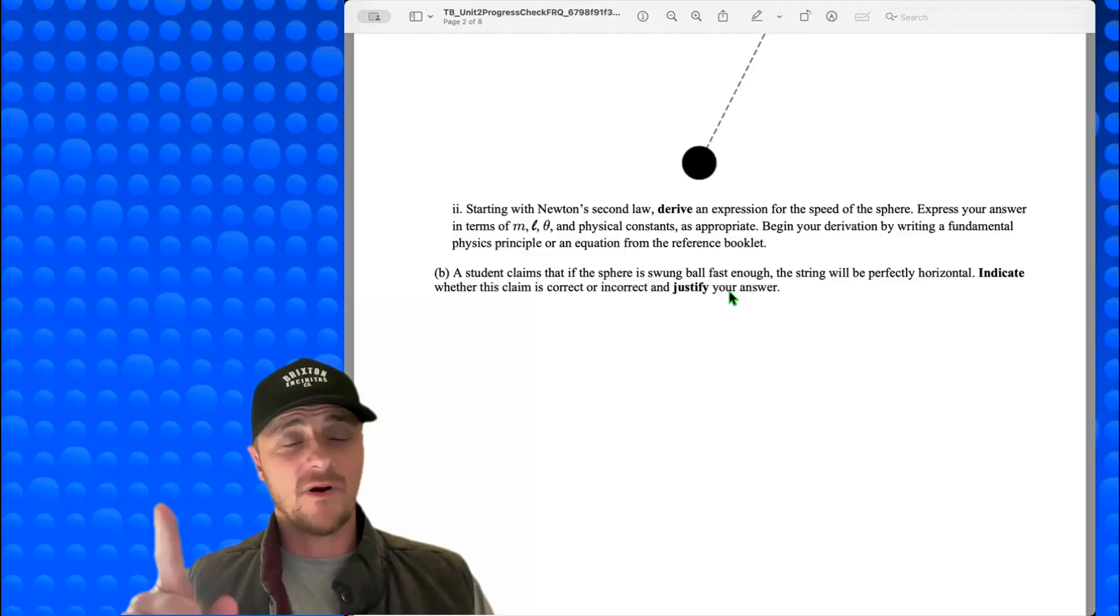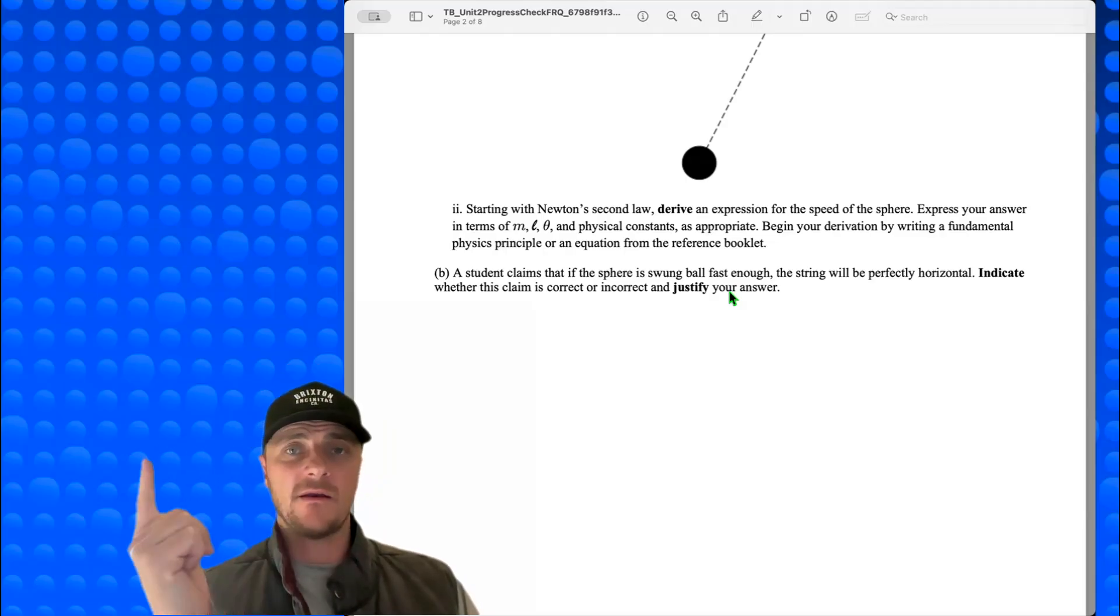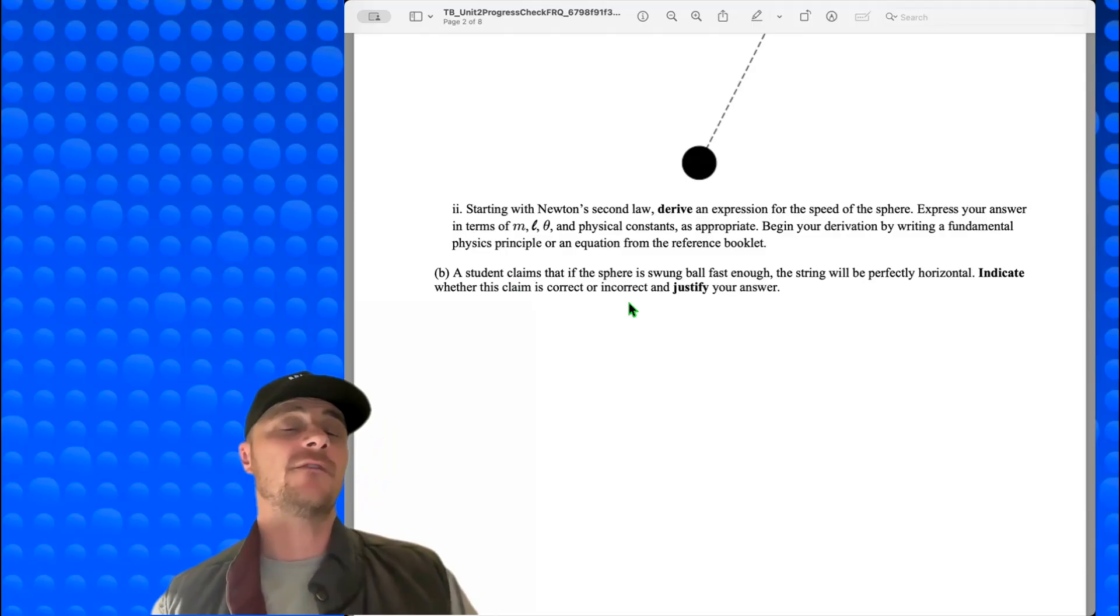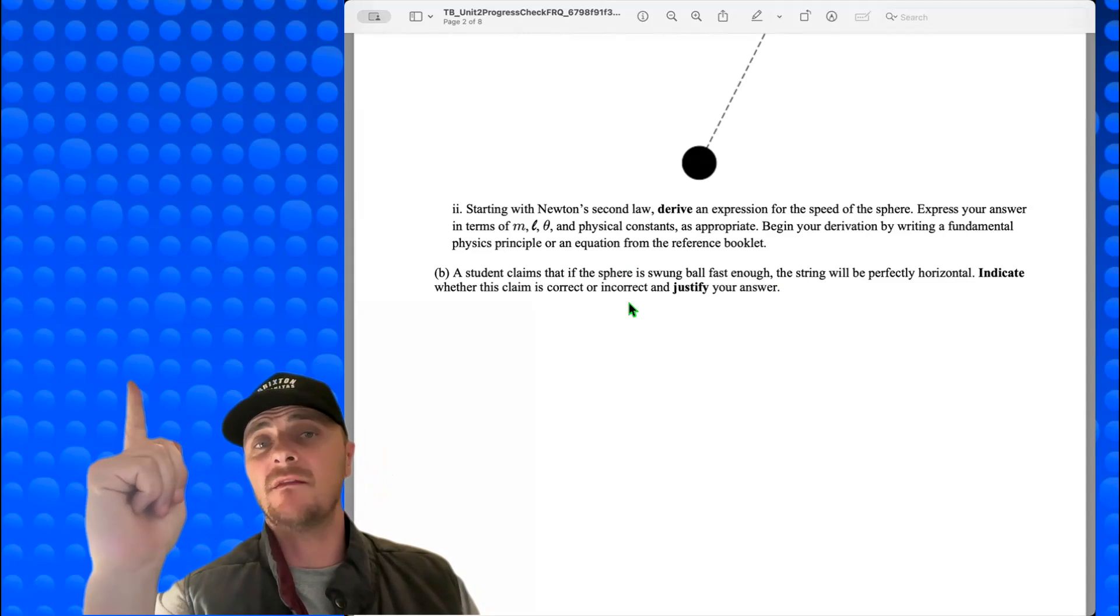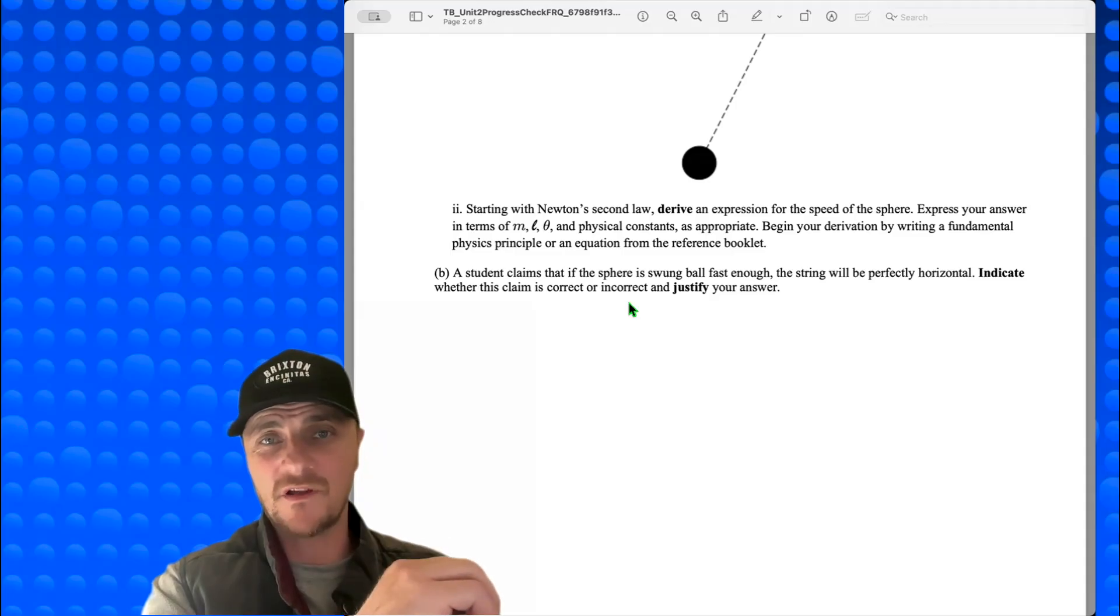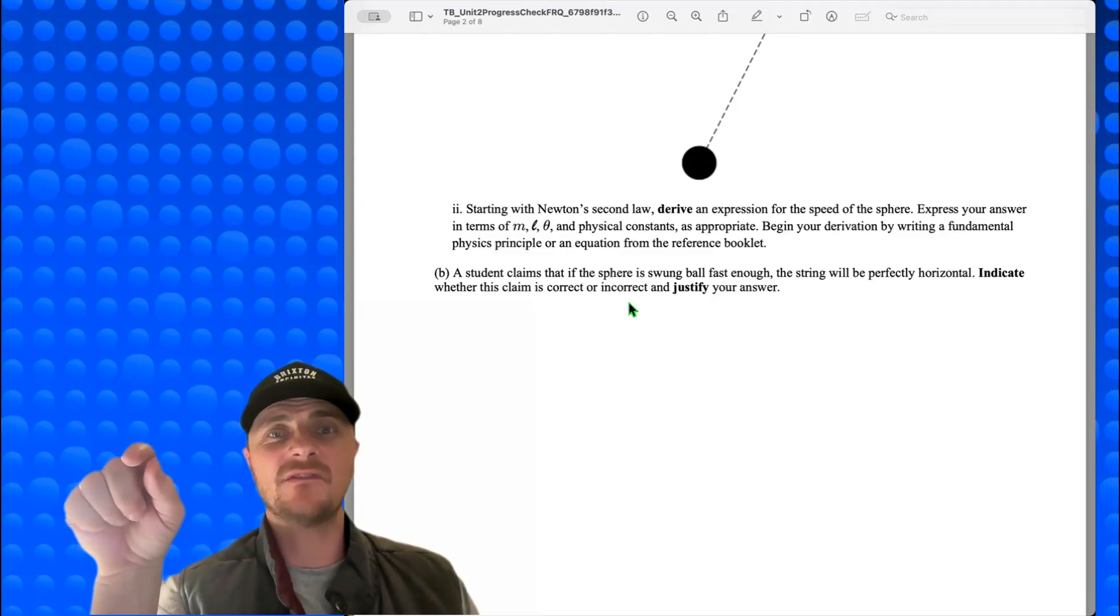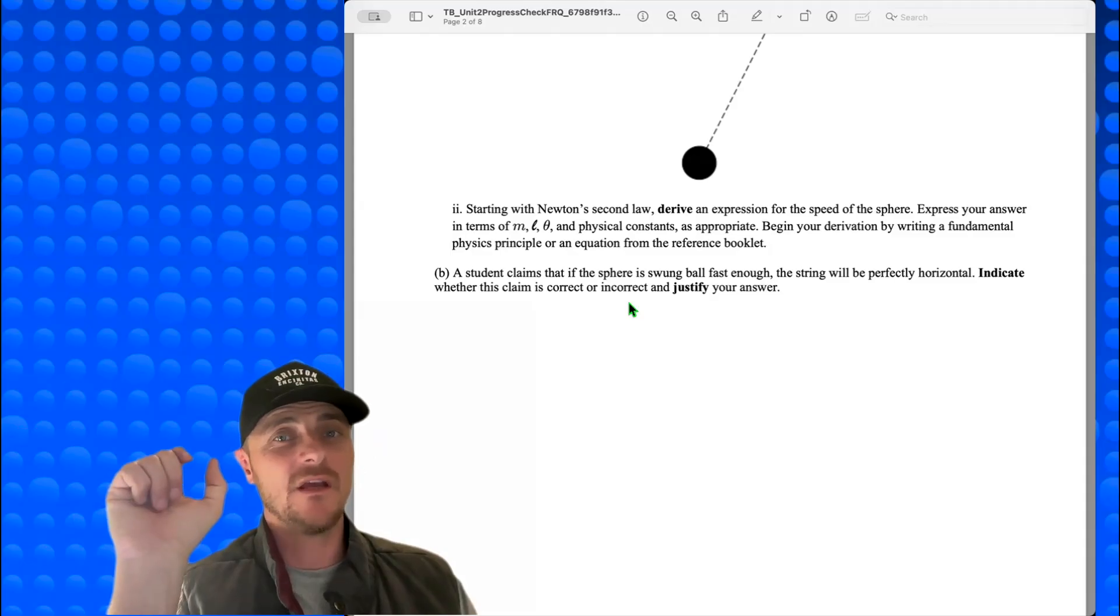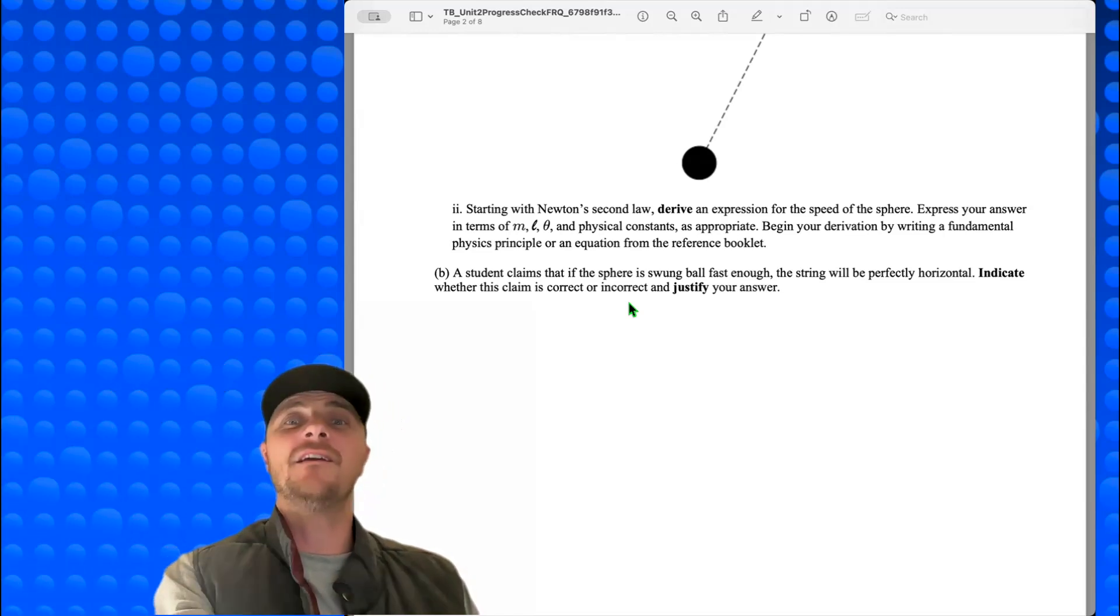Okay, going to the last part. We're just about done with this thing. Part B. A student claims that if we swing this thing fast enough, we can get the ball to go completely horizontal and get it to swing like that. Indicate whether this claim is correct or incorrect and justify your answer. So here's what I would say. Get ready to write. Since gravity will always be a downward force on the ball, that must mean there's always an Ft cosine theta acting upward. Since there's an upward component of tension, tension will always be at a downward angle. And the ball cannot be horizontal. Does that make sense? I'll try it again. Since there's always a gravity acting down on the ball, there must always be an Ft cosine theta pointing up to balance out that force. With an upward component of tension, tension will always be angled downward and therefore the ball will not swing in a horizontal circle.